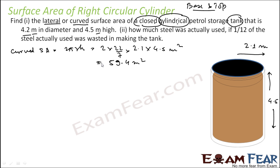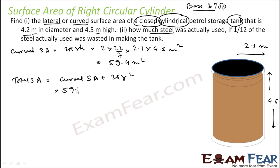But to find how much steel is required to make this tank, we actually need the total surface area, because steel is also used to make the base and the top. Total surface area is curved surface area plus 2πr². That is 59.4 + 2 × (22/7) × 2.1 × 2.1. Solving this, you get 87.12 meters square.